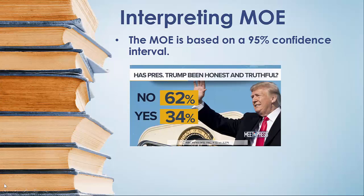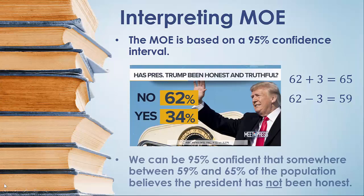Let's take that margin of error, 3.27%, and simplify it — let's just say we're talking about plus or minus 3%. We take 62 and add 3%, which gives us 65%. Then we take 62 and subtract 3%, which gives us 59%. Those two numbers represent the lower and upper bounds of our confidence interval. We can be 95% confident that somewhere between 59% and 65% of the population believes the president has not been honest or truthful.